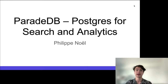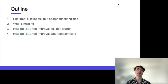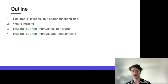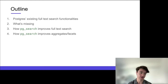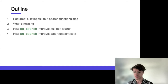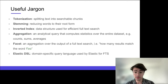The talk is going to be split into four sections. First we'll cover existing full-text search functionality in Postgres. Then we'll talk about what's missing and why we can make it better — specifically around two areas: pg_search, our Postgres extension, which we use to innovate around full-text search and around aggregates or facets.